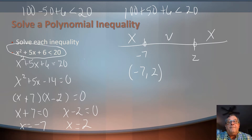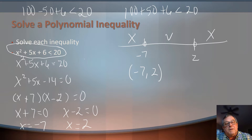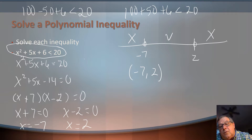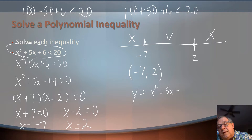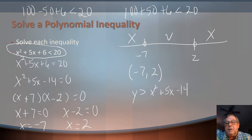One thing before I go graph this: when I write this as a function in y = form, I have to make sure I flip that inequality around. So if I write it as a function, I'm going to actually say y > x² + 5x − 14. When I graph it, I want to show you a trick — some features on your calculator that can help you visualize your solution sets. So let's go to another problem.